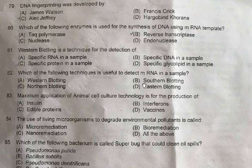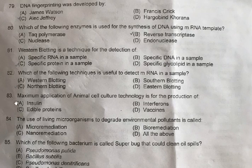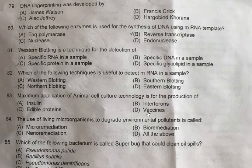Question 82: Detection of specific RNA in a sample uses — A: Western blotting, B: Southern blotting, C: Northern blotting, D: Eastern blotting. The correct option is C, Northern blotting. Question 83: Maximum application of animal cell culture technology is for the production of — A: Insulin, B: Interferons, C: Edible proteins, D: Vaccines. All these products are produced using animal cell technology, but the maximum application is for D, Vaccines.